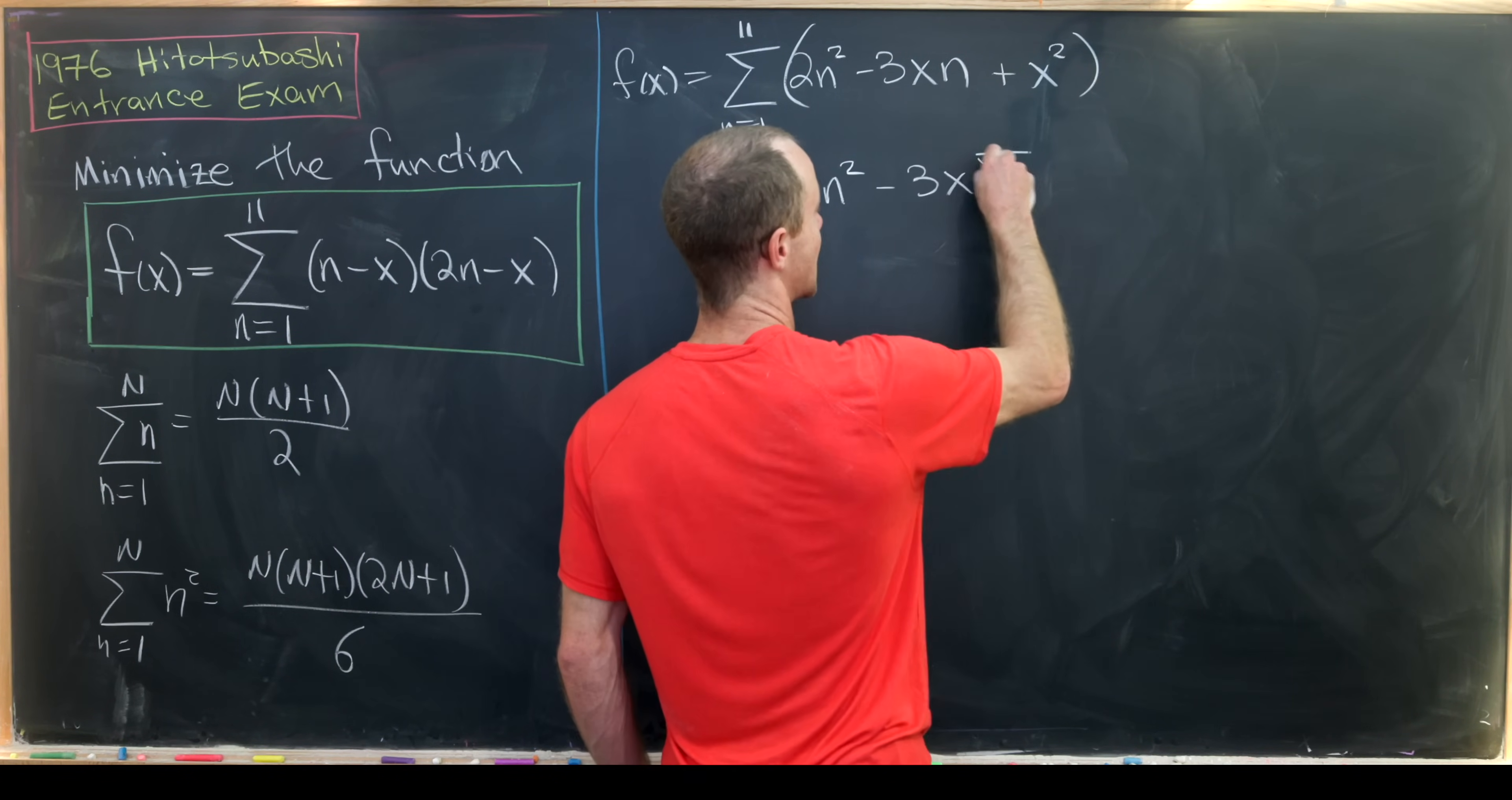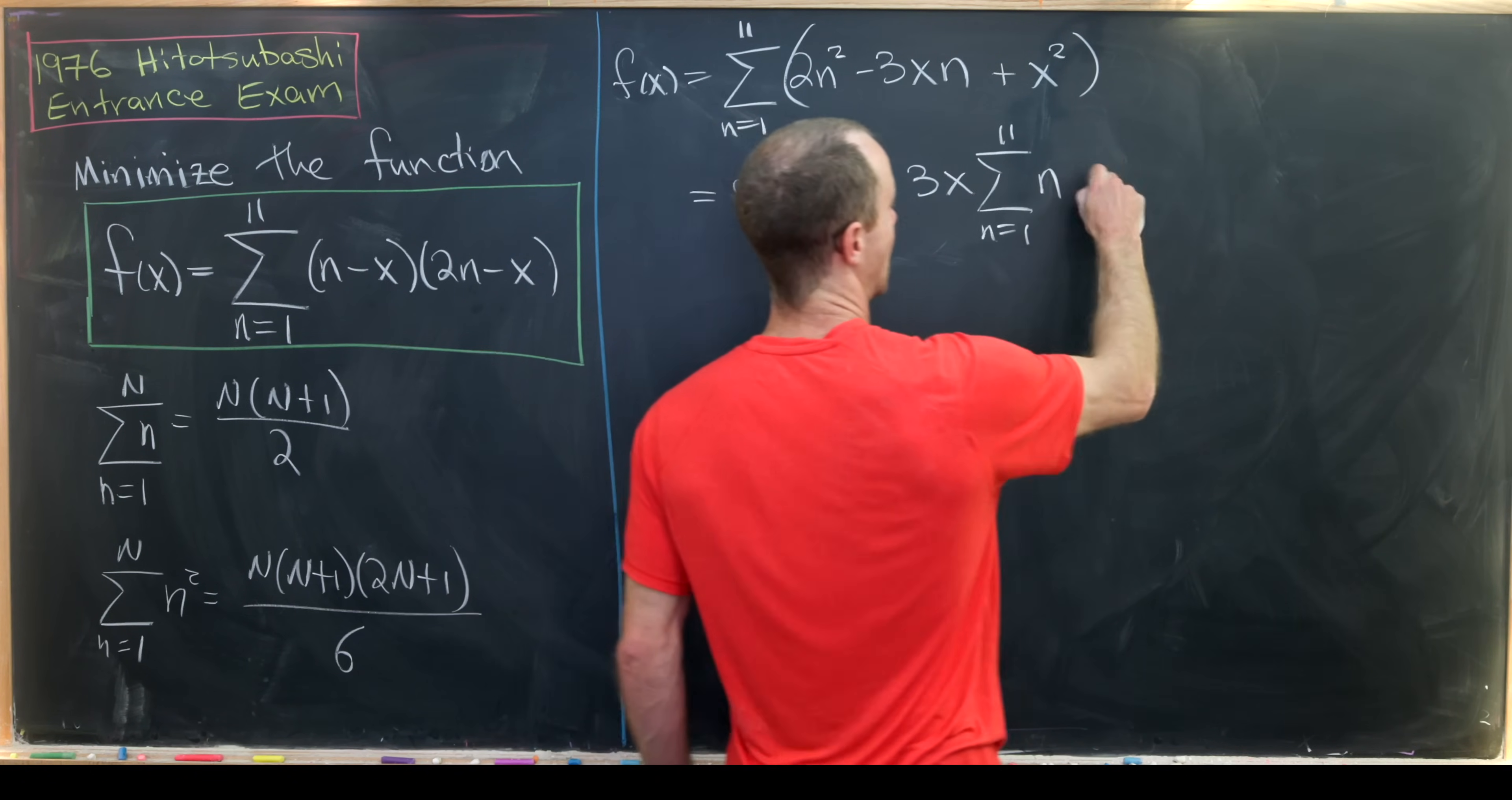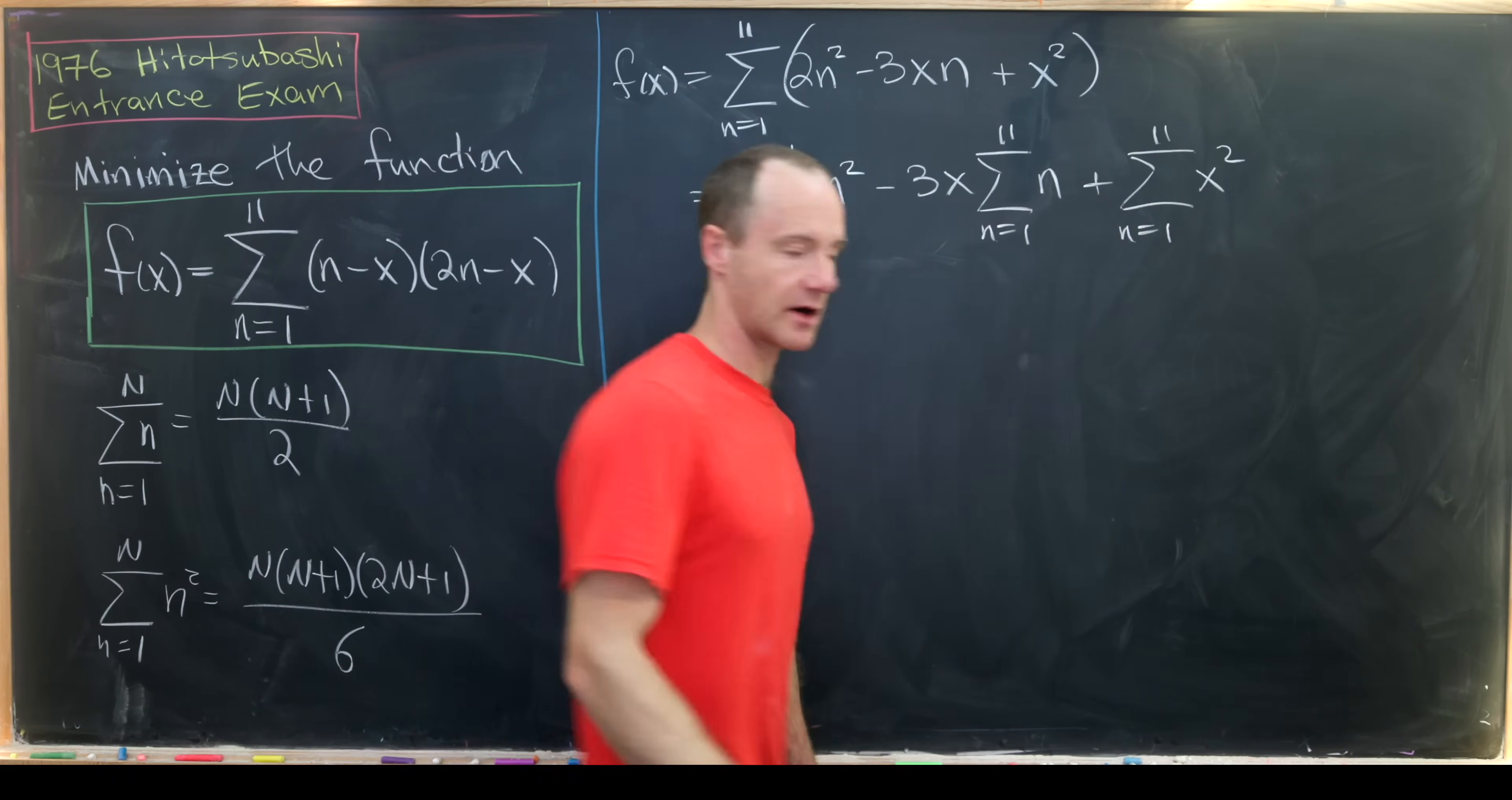Minus 3 times x and then the sum as n goes from 1 to 11 of n, and then plus the sum as n goes from 1 to 11 of x².